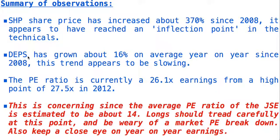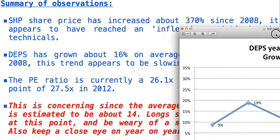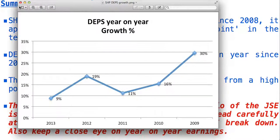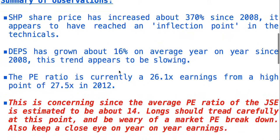The diluted earnings per share has grown about 16 percent on average year on year since 2008, but this trend appears to be slowing. It was about 30 percent growth from 2008 to 2009, approximately 16 percent average, and now it has only grown 9 percent. So if earnings growth is slowing, long positions in the share should really take care of their positions at the moment.